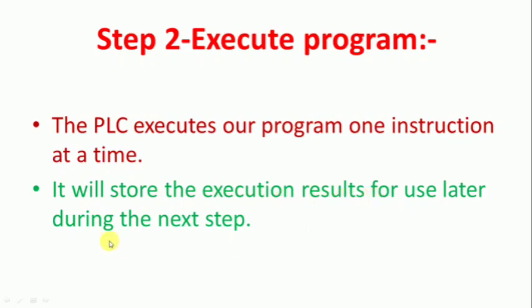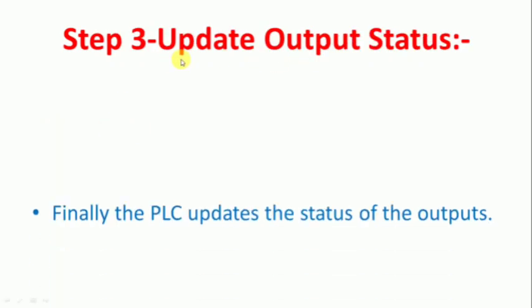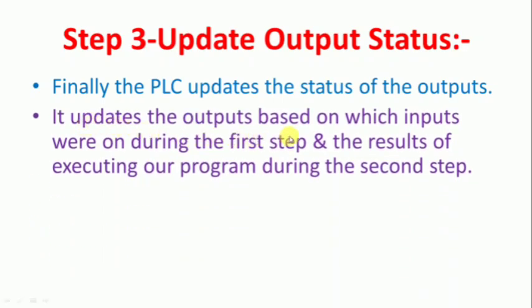It will store the execution result for later use in the next step. The program execution will check the input, and the program executes the result. In the third step, the output status will update. Finally, the PLC will update the status of the output based on which inputs were active during the first step and the result of the execution of the program during the second step.